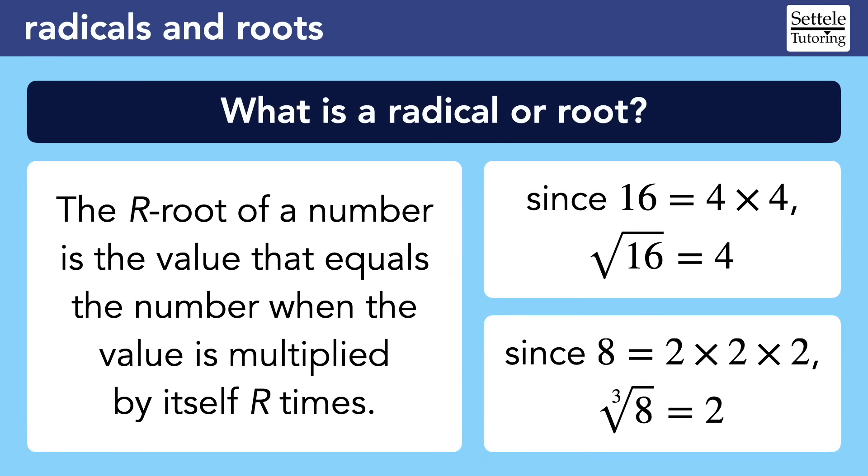This is a good spot to backtrack a little and remind ourselves what a radical actually means. The mathematical definitions tend to sound a bit confusing. The r root of a number is the value that equals the number when the value is multiplied by itself r times. Using actual numbers makes radicals easier to understand. The square root of 16 is 4, because 4 multiplied by itself 2 times is 16. Similarly, the cube root or third root of 8 is 2, because 2 multiplied by itself 3 times is 8.